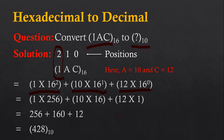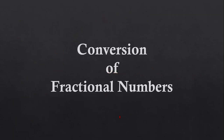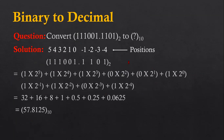I hope you have understood how we can convert integer numbers available in binary, octal, and hexadecimal into the decimal number system. Now, after learning the conversion of integer numbers, I am going to discuss the conversion of fractional numbers. We will use the same set of steps for converting fractional numbers from binary to decimal, from octal to decimal, and from hexadecimal to decimal.